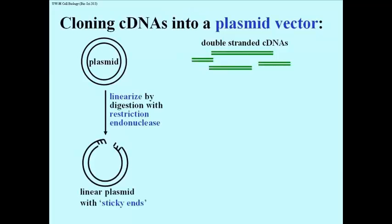So here we have a plasmid on the left. We're going to linearize it. Remember, plasmids are circular double-stranded DNA molecules that exist in bacteria apart from the actual chromosome. They're a lot smaller.